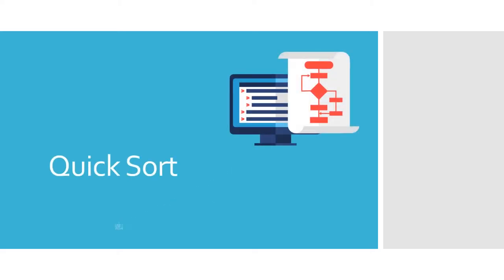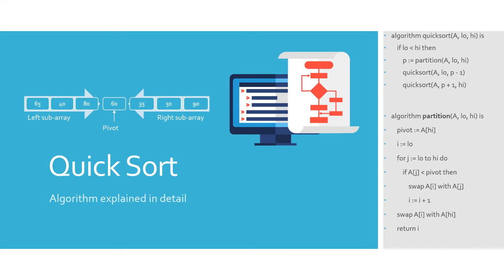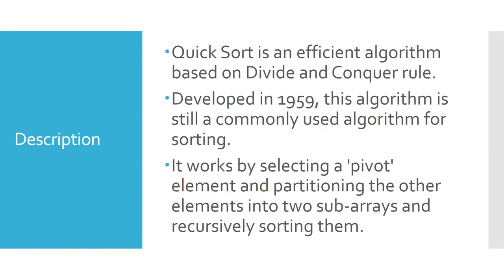In today's video I'm going to explain quicksort in detail and demonstrate a few C programs to show how quicksort works and the steps involved in sorting the arrays. Quicksort is an efficient algorithm based on the divide and conquer rule, developed in 1959, and is still commonly used for different sorting purposes.